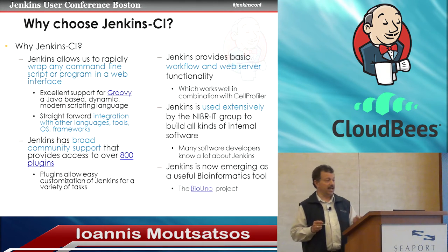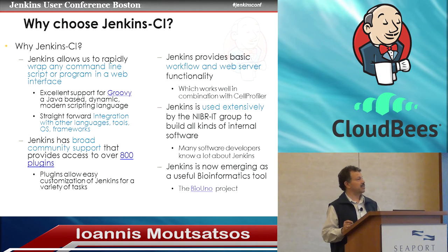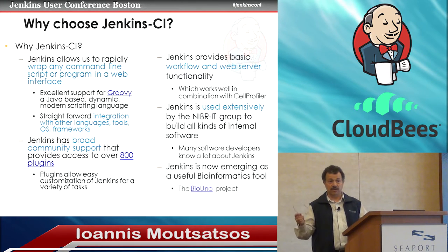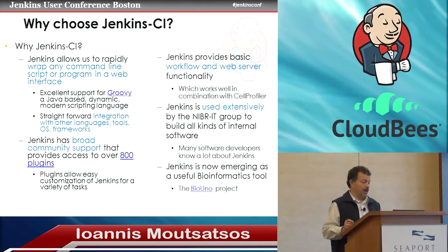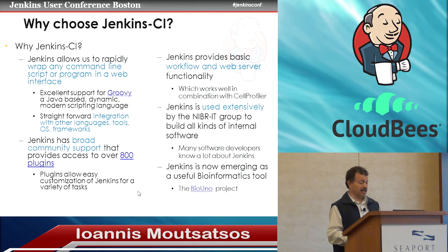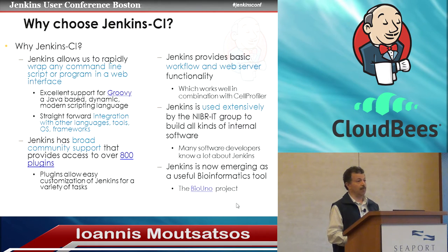Jenkins allows us to very rapidly wrap any command line script or program in a web interface. It has excellent support for Groovy, which is a Java-based dynamic scripting language. Python is equally good as another scripting language to use. Of course, the growing community support from Jenkins and the over 800 plugins available is a major asset. Jenkins provides us with a basic workflow and web server, and is used extensively internally in our Novartis IT group for building all kinds of internal software. Jenkins is also emerging as a useful bioinformatics tool. There is a project called the BioUno project that I'm going to refer to a couple of times in this talk — it has been very critical in supporting what I'm doing, and I recently joined this project.